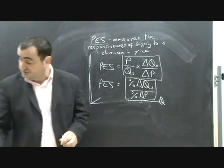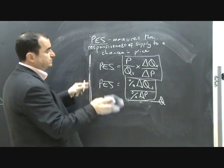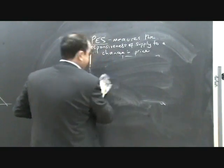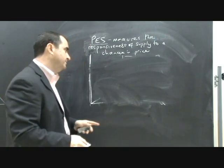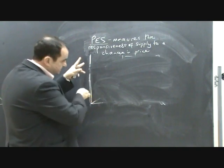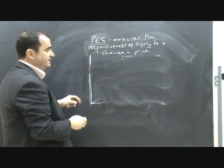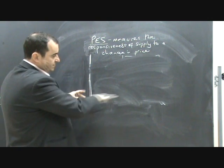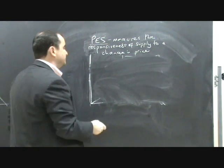The values that you get will always be positive for price elasticity of supply because when there's a rise in price, there's a rise in quantity. When there's a fall in price, there's a fall in quantity supplied. So because the change in quantity is always going in the same direction as the change in price, we always get a positive value on PES.